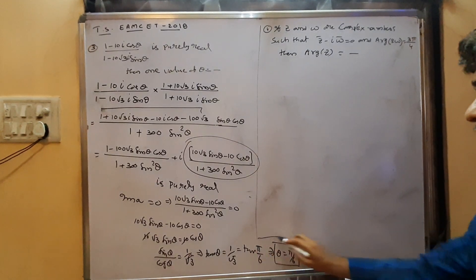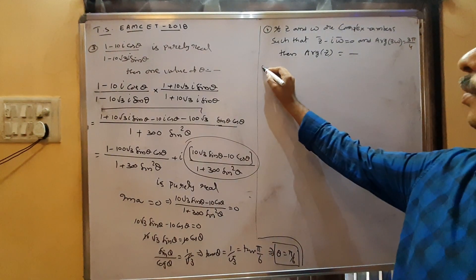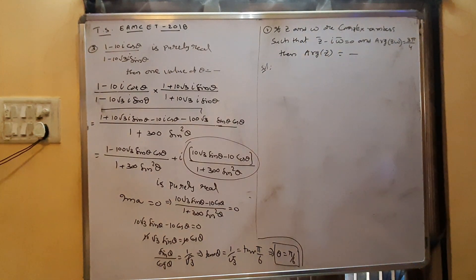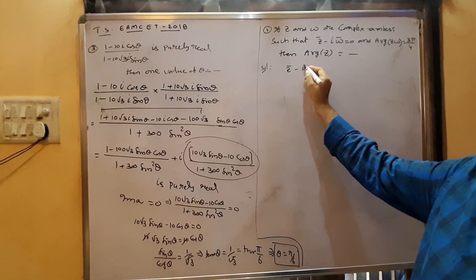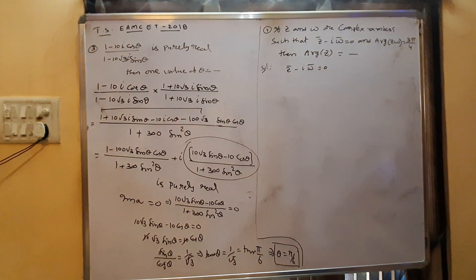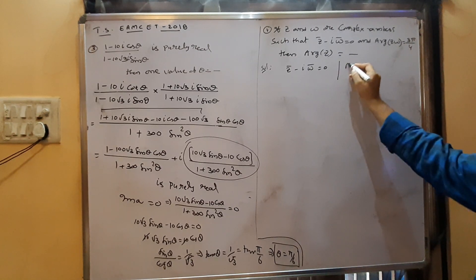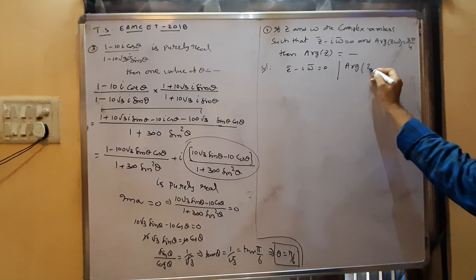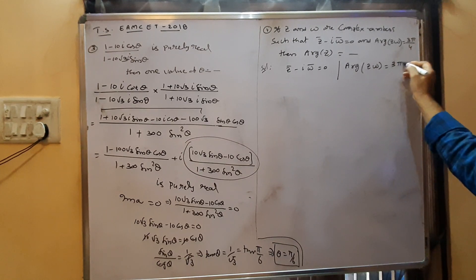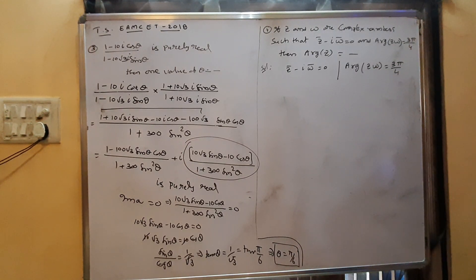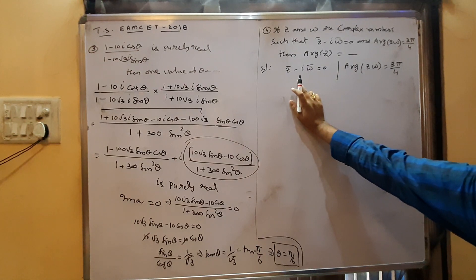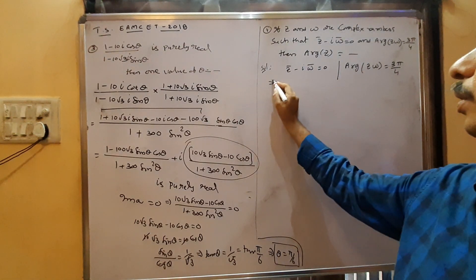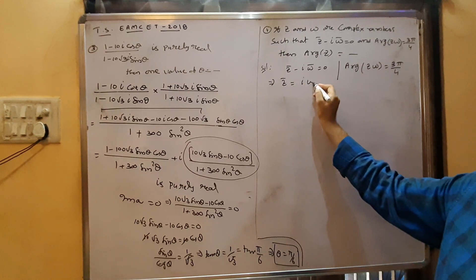Fourth question: Z and ω are complex numbers such that Z̄ − 5ω̄ = 0, and arg(Zω) = 3π/4. Find arg(Z). From the first condition, Z̄ = 5ω̄... actually Z conjugate = i·ω conjugate. Using this, we find the argument of Z/ω.